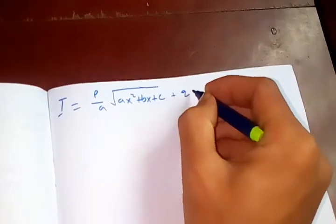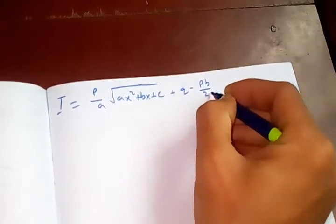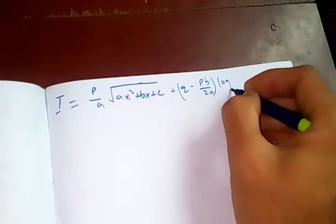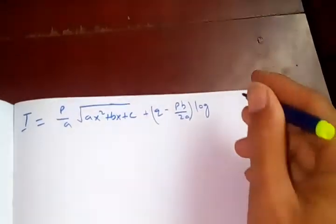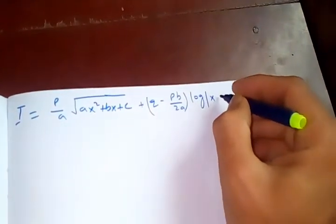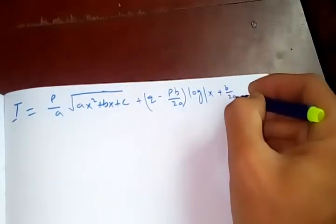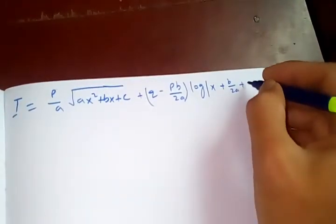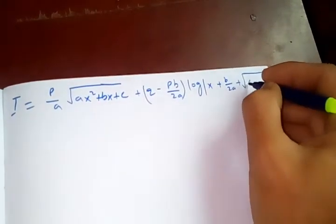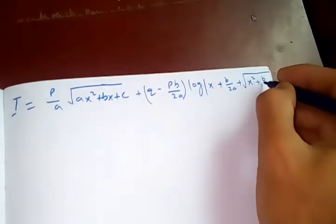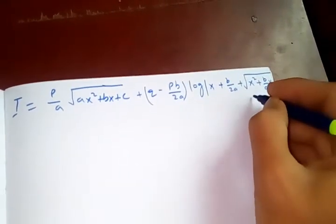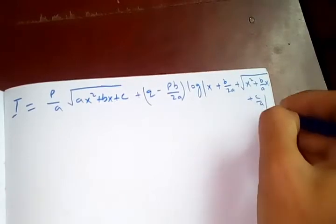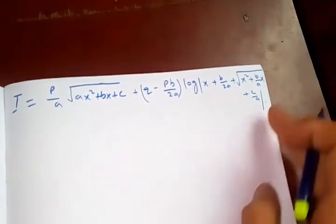q minus pb upon 2a log of x plus b upon 2a plus square root of x square plus b over a x plus c over a. This one continue.